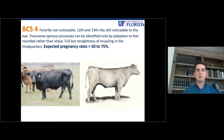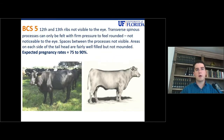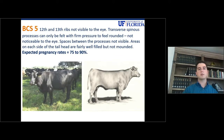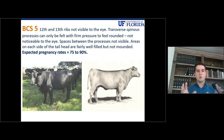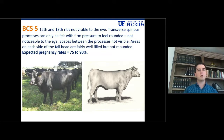A cow at body condition score 5 — this is our standard. This should be the minimum body condition score at the time of calving. So make sure that you keep the image of this cow in your mind, and that will help you determine the other body condition scores whether a cow is above or below that.